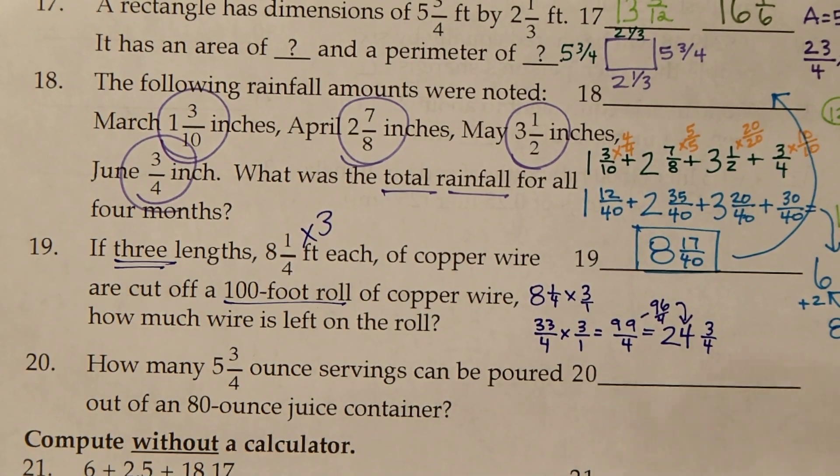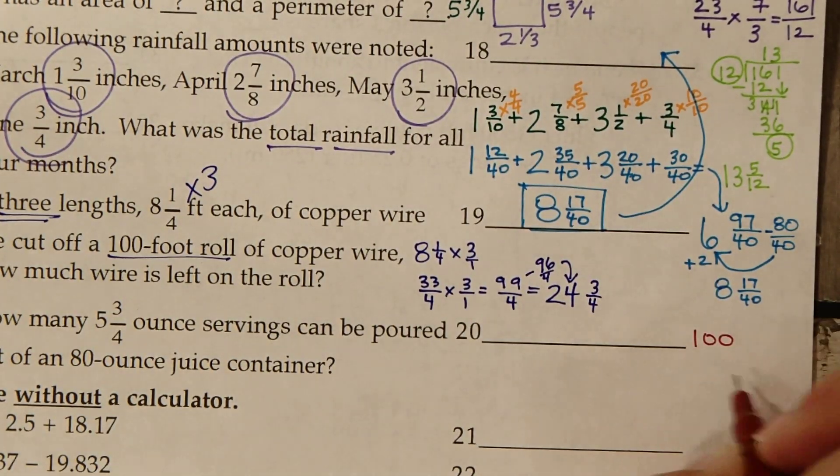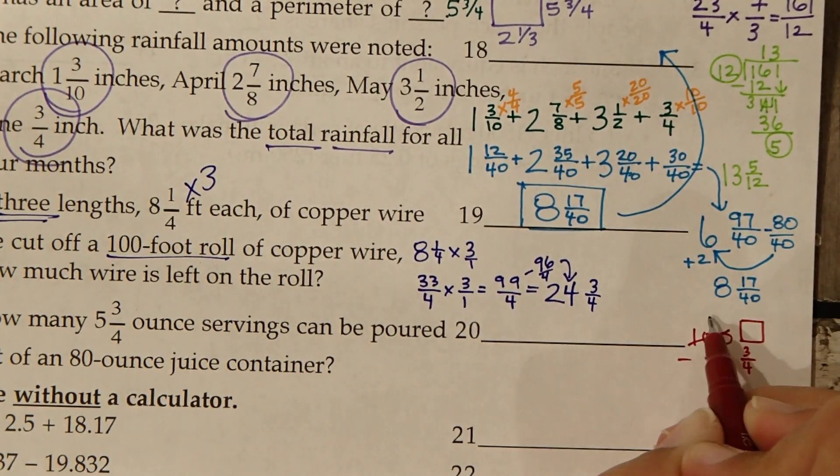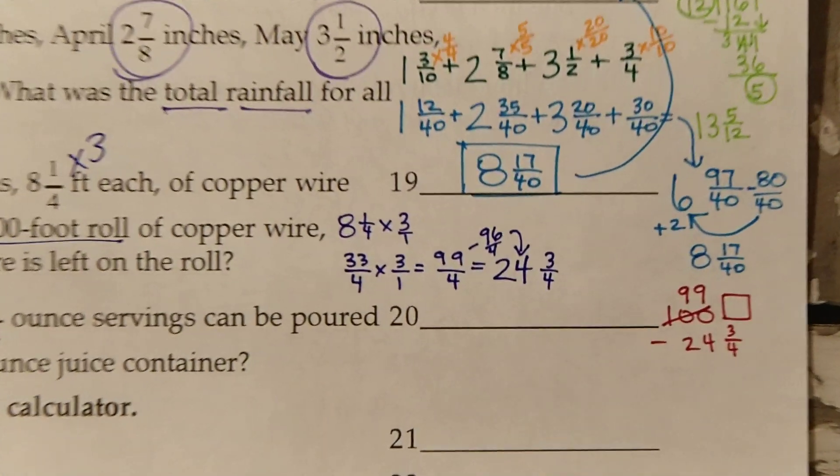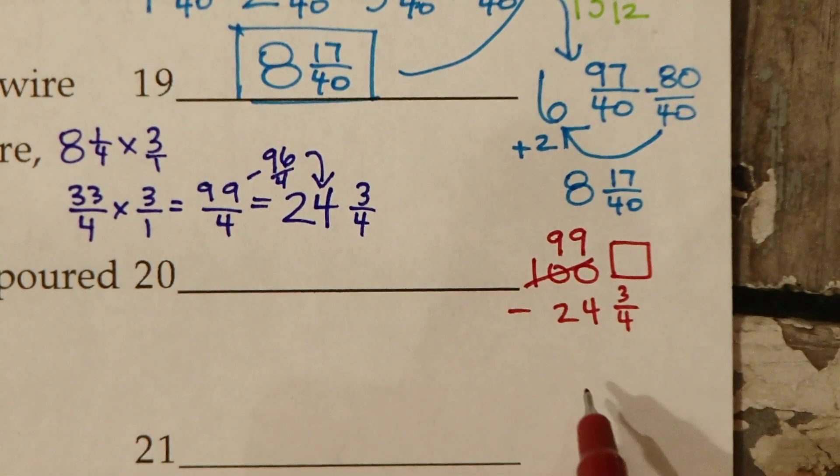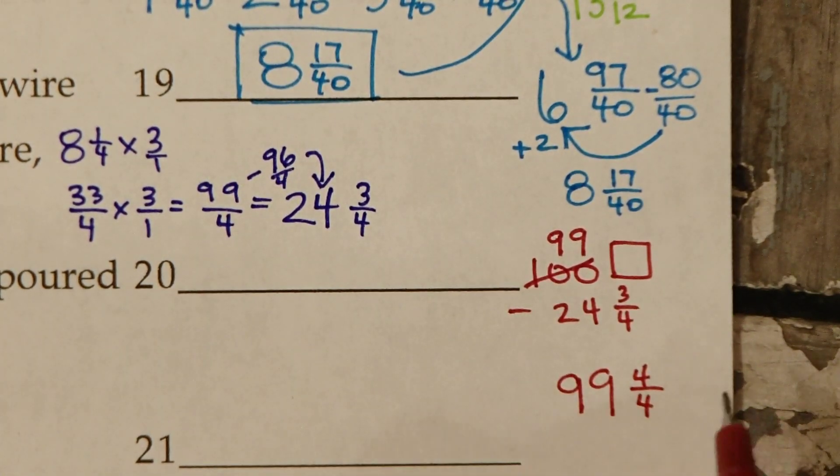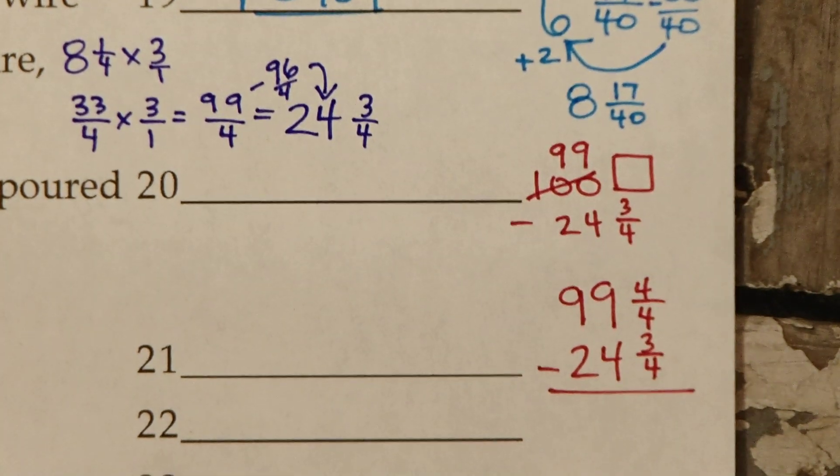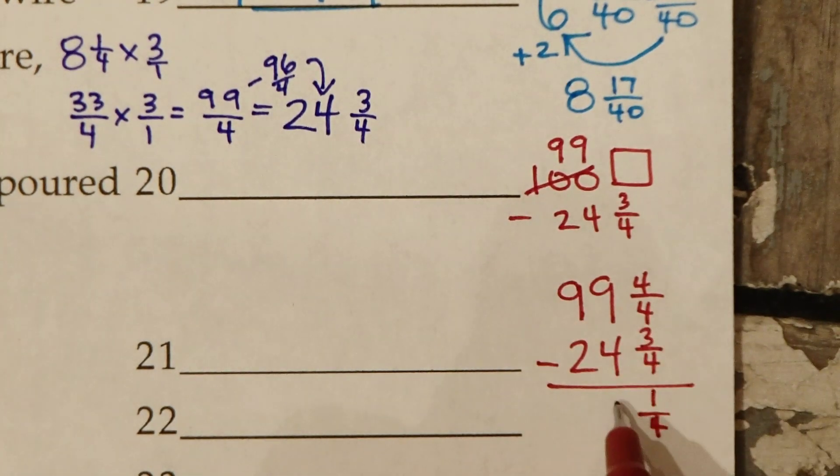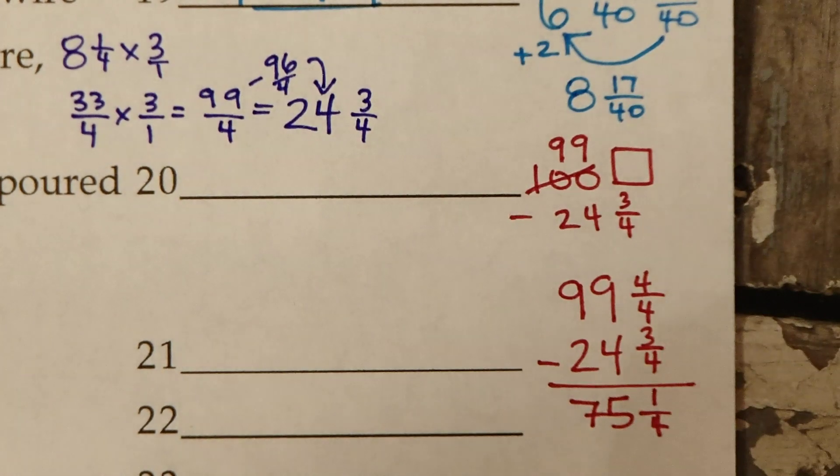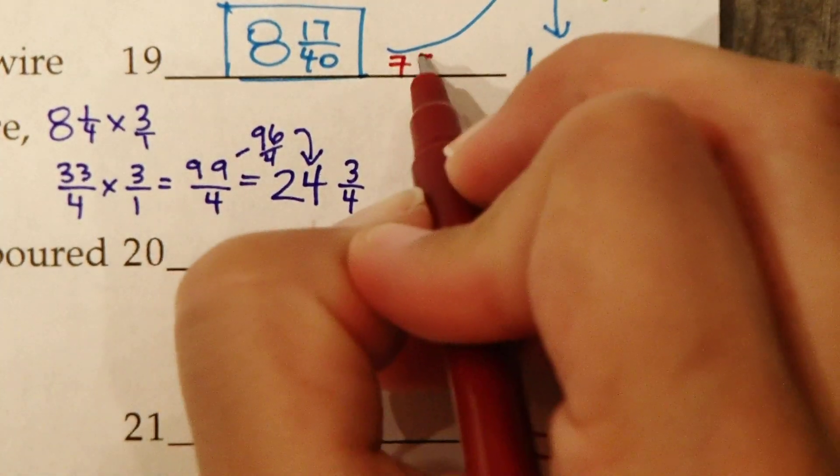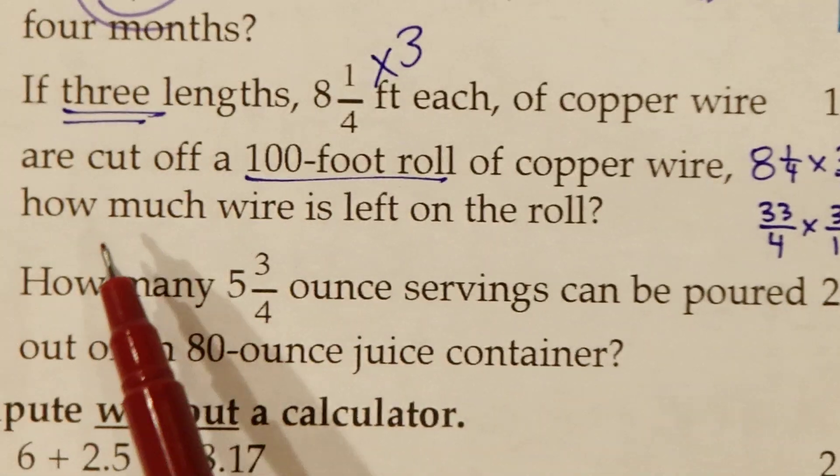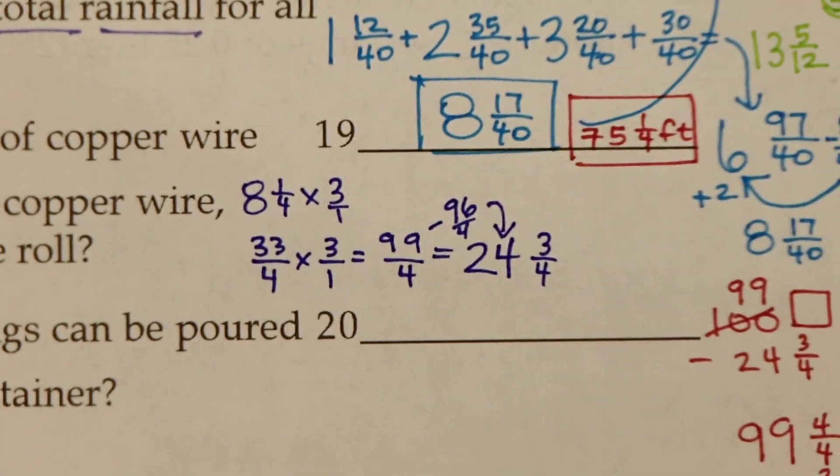Our next step is taking this away from the 100 foot roll. 100 minus 24 and 3 4ths. There's nothing here to subtract from, so we need to borrow from this 100. It becomes 99. We're going to add one hole in the form of the denominator we're dealing with, so this becomes 99 and 4 4ths. Now minus 24 and 3 4ths. 4 minus 3 is 1, so that's 1 4th. 9 minus 4 is 5, 9 minus 2 is 7. Number 19 is 75 and 1 4th.